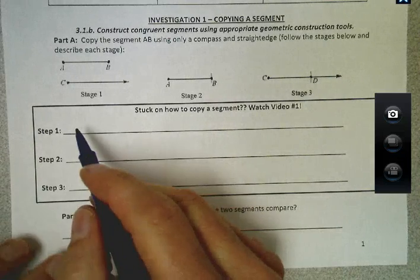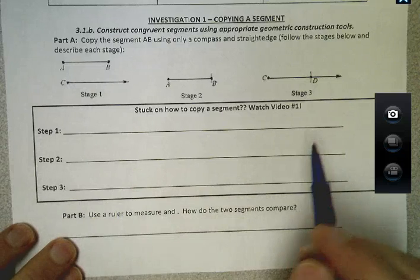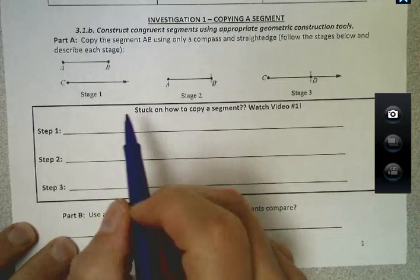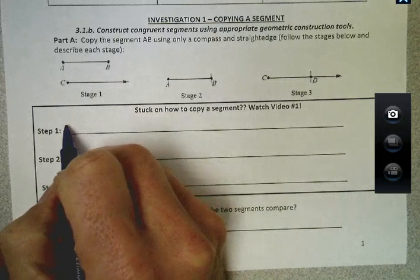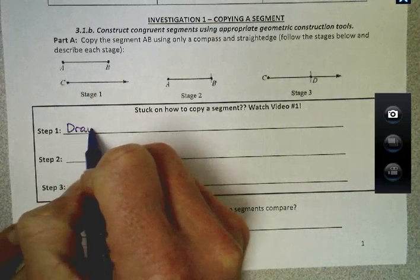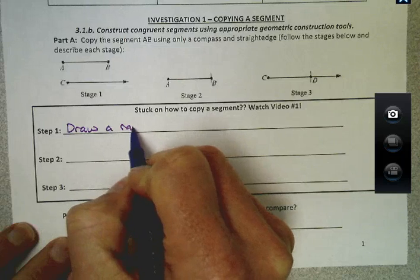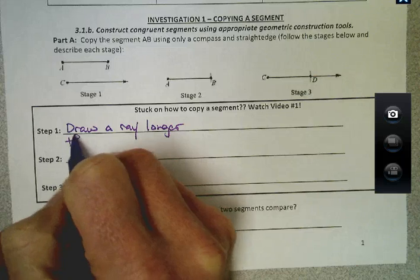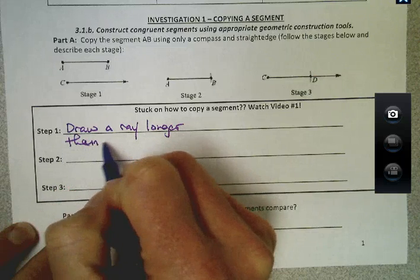So what we're going to do is write out the steps here and then we'll actually do the copying. The first step when we want to copy this segment is that we're going to draw a ray longer than the segment.